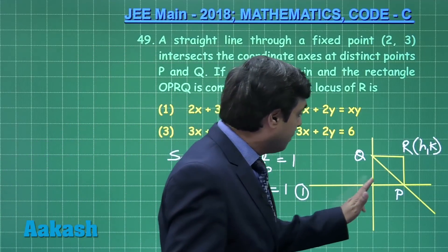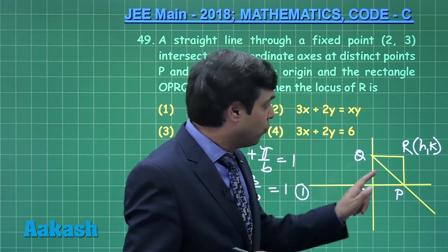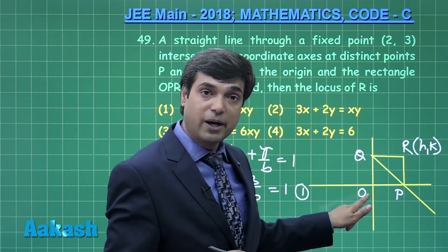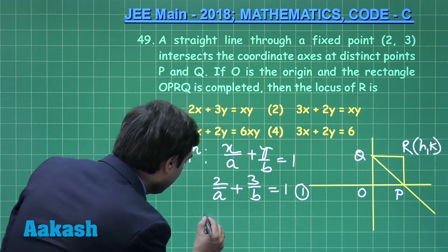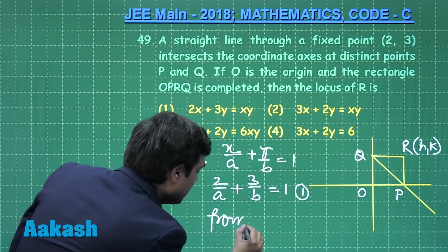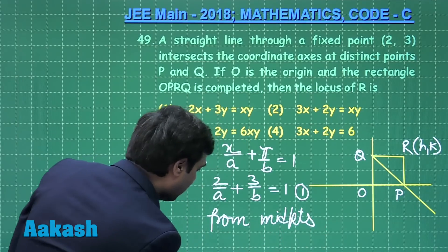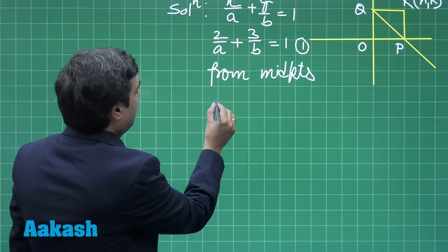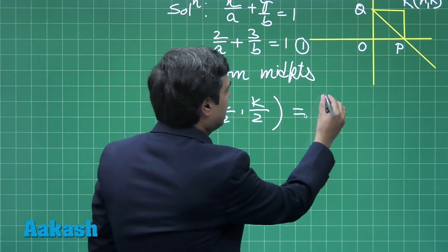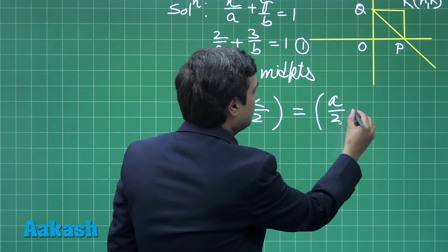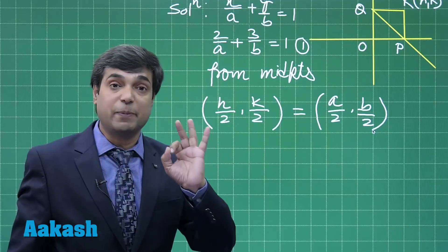Now we are talking about a rectangle: midpoint of OR and midpoint of QP coincide. The midpoint of OR is (h/2, k/2), midpoint of PQ is (a/2, b/2). Clearly, from midpoints, we have h/2, k/2 equals a/2, b/2. So we get a and b equals h and k respectively.